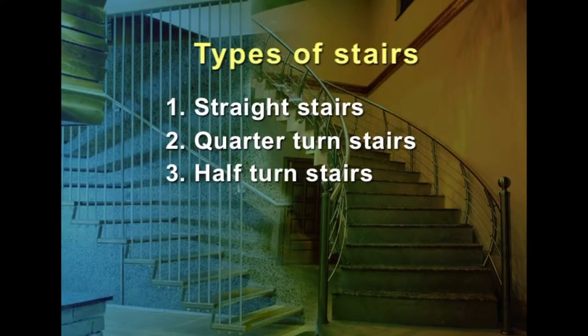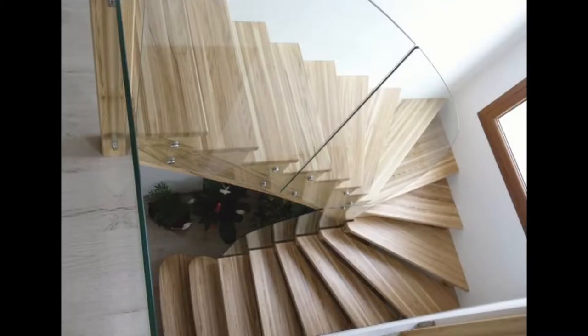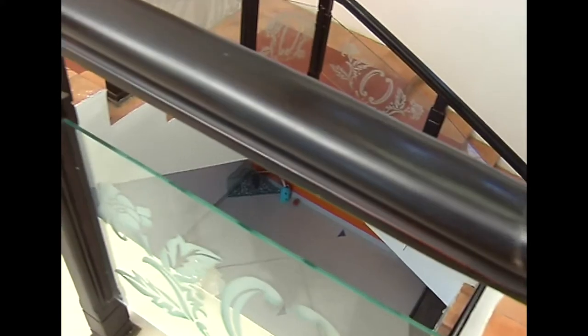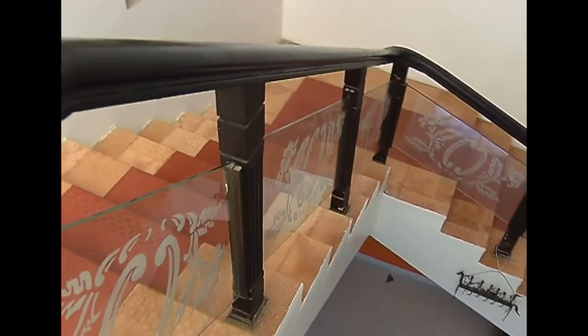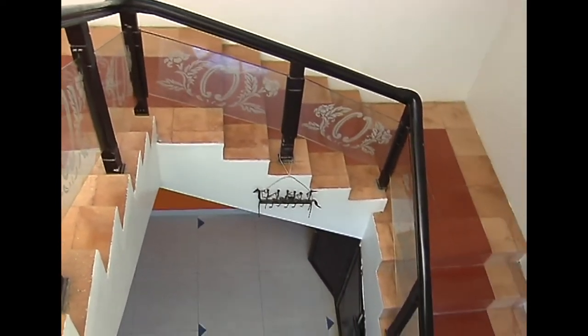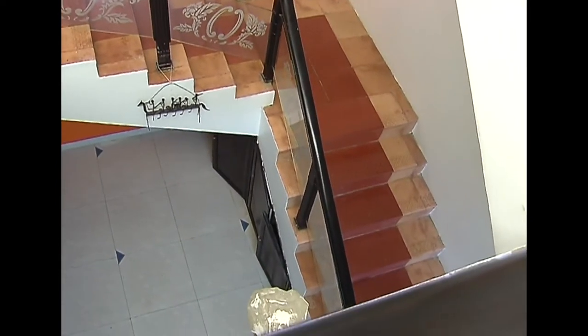Half-turn stairs change direction through 180 degrees. They can be either dog-leg or open newel type. In dog-leg stairs, the flights are in opposite directions and no space is provided between the flights in plan. In open newel stairs, there is a well or opening between the flights, which may be used to accommodate a lift. These stairs are used at places where sufficient space is available.